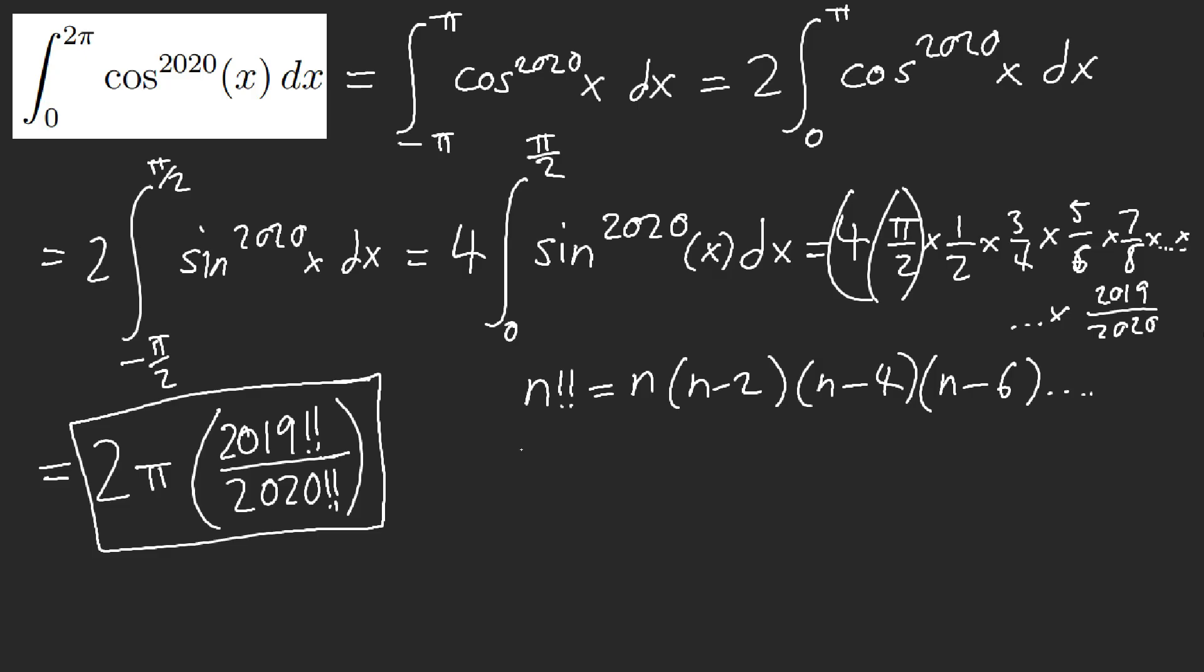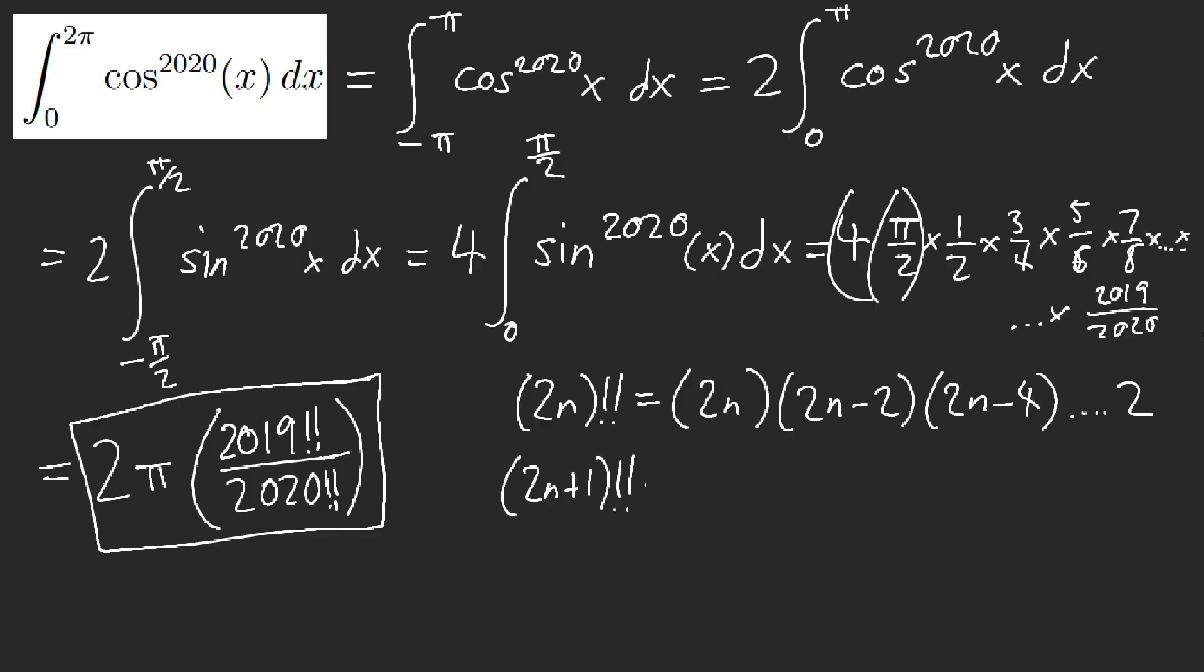I think it's better if I write it like this. If this was 2n factorial, then it would be like 2n times 2n minus 2 times 2n minus 4, and then it comes until 2. Technically it stops at 2. If we had an odd integer with a double factorial, then you get 2n plus 1, then subtract 2 again, 2n minus 1, 2n minus 3, until you reach like 3 times 1 and then you're done. So that's double factorial.